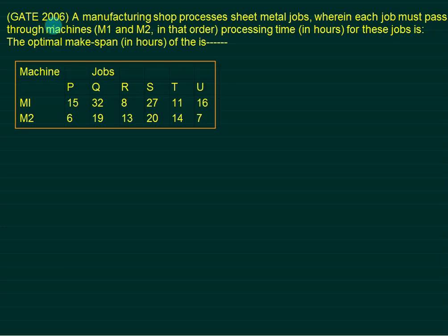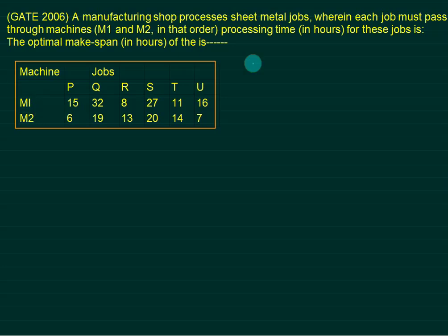This is a question from GATE 2006. A manufacturing shop processes sheet metal jobs where each job must pass through machines M1 and M2 in order. The processing times in hours for each job are given, and we want to find the optimal makespan time in hours. We are given six jobs with processing times on machine M1 and machine M2. First, apply Johnson's rule.